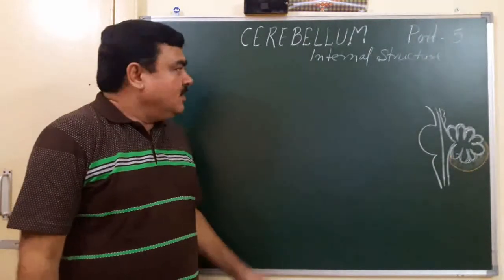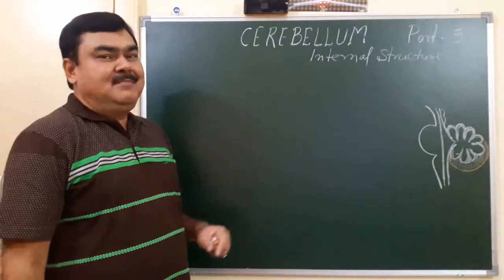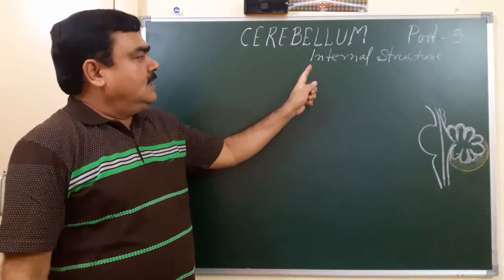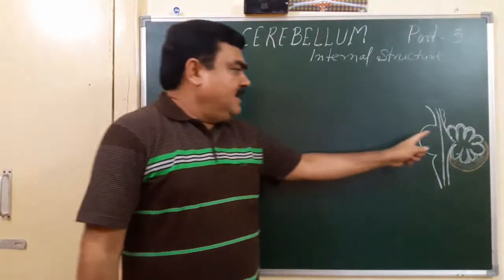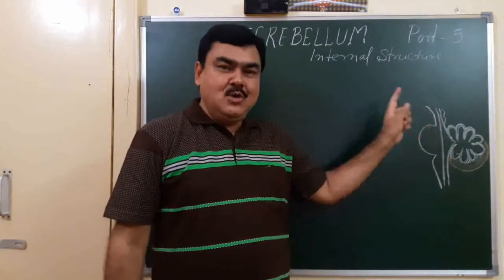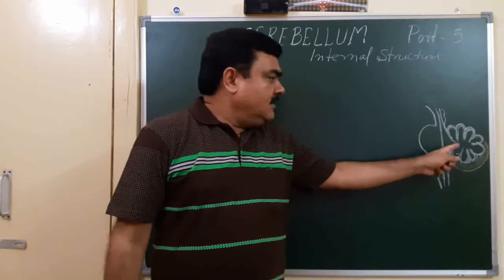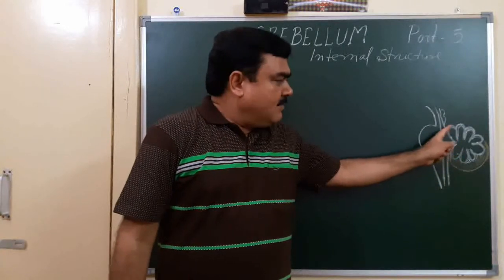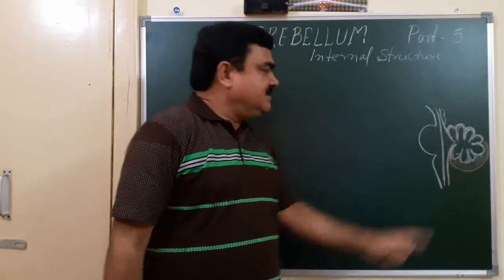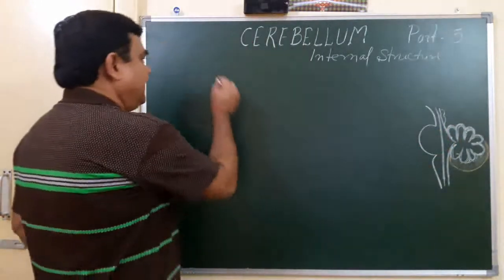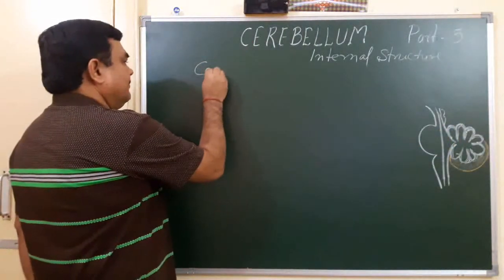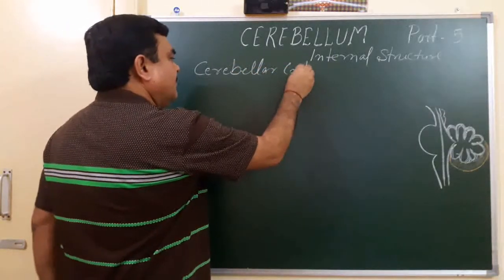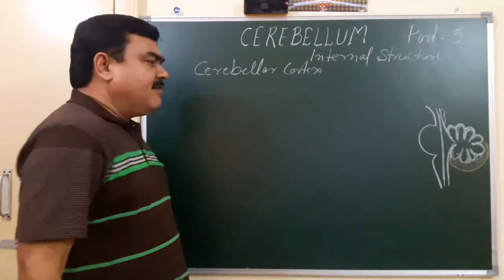Now we will discuss part 5 of the cerebellum. In this part you have seen internal structures. In the previous lecture you have seen the nuclei and the white matter of the cerebellum. Now we will discuss about the cerebellar cortex. This is the peripheral part, and it is made up of grey matter.